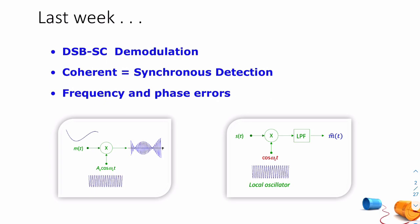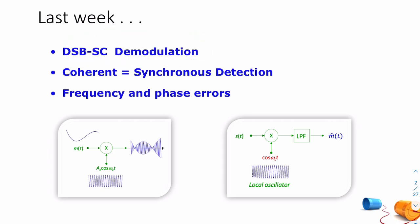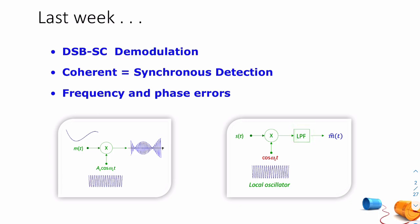Just as a reminder, last week we finished talking about amplitude modulation. In particular, we spoke about the demodulation of double sideband suppressed carrier modulation. We introduced something called the coherent detector, also known as a synchronous detector. A coherent detector looks very much like a DSB modulator, consisting of a local oscillator, a multiplier, and a low-pass filter to block the high-frequency components and recover the message.